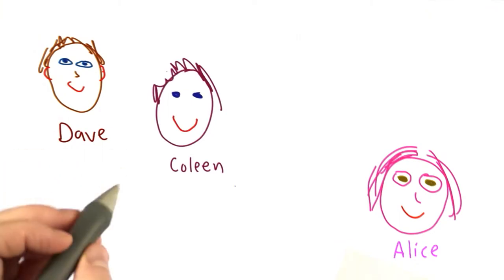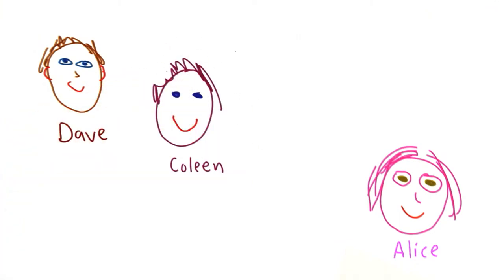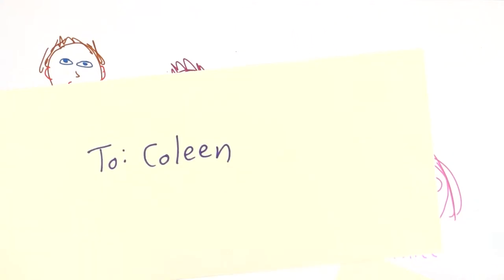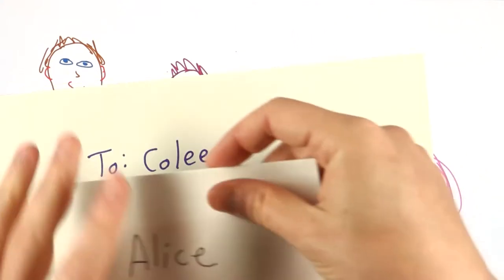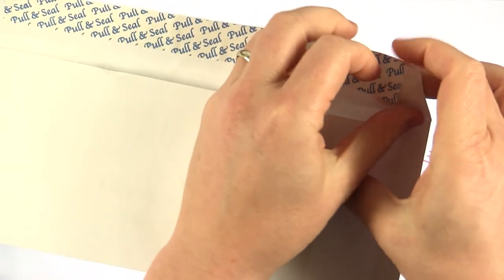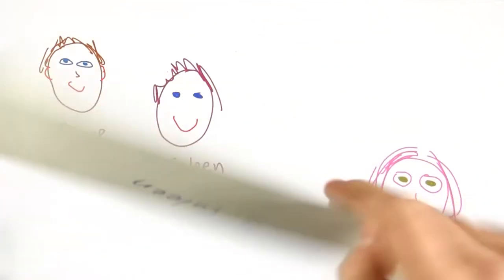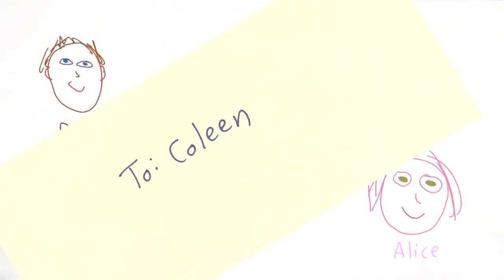What I'm going to do instead is use Colleen. I'm going to give the message to Colleen and ask Colleen to give the message to Alice. So I will have a new envelope. I'll give this to Colleen, and what I'll put in that envelope is the message I want to give to Alice. And this also has a very secure seal, so no one else will open the message, and I give it to Colleen.